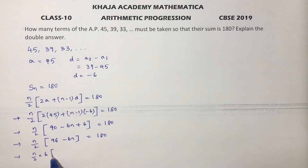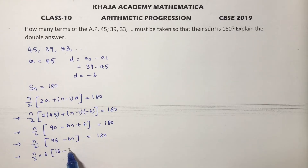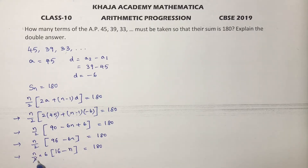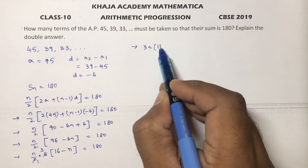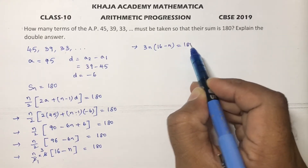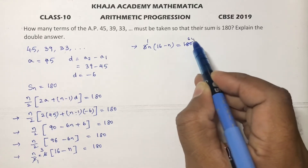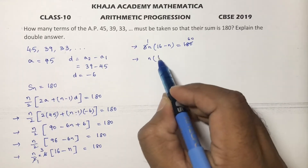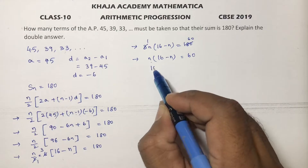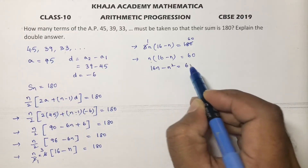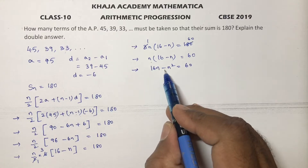Taking 6 common from the two terms inside gives n by 2 into 6 times (16 minus n) equals 180. Cancelling 2 and 6 gives 3n(16 minus n) equals 180, which expands to 48n minus 3n squared equals 180.